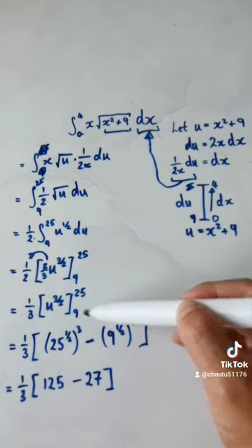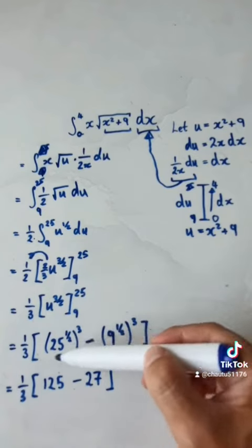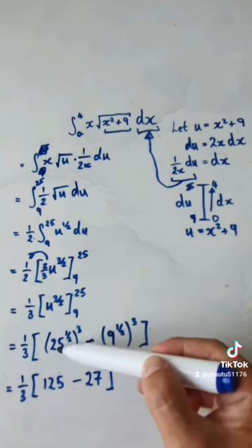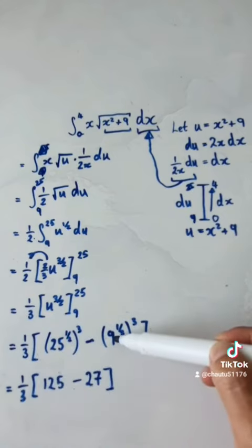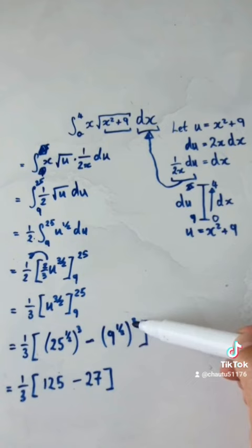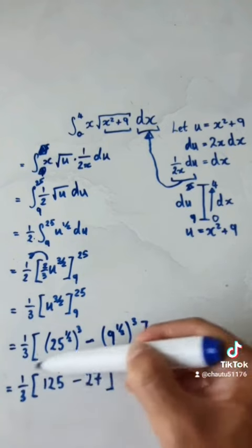That will then give you this. This whole thing here, square root of 25 is 5 cubed. It will then give you this. 9 square root of 9 is 3 cubed. It will then give you this. Your final answer is this.